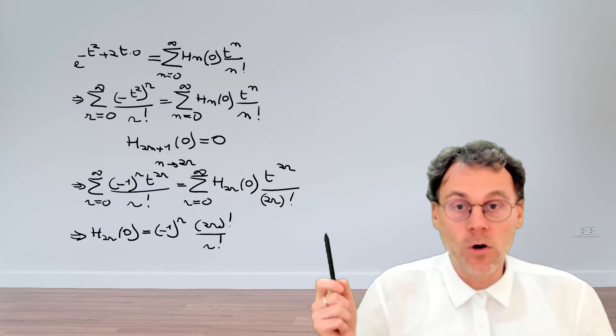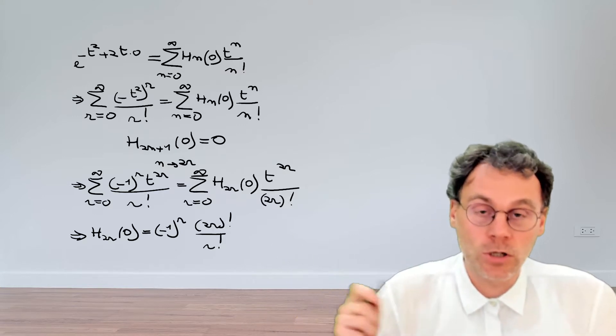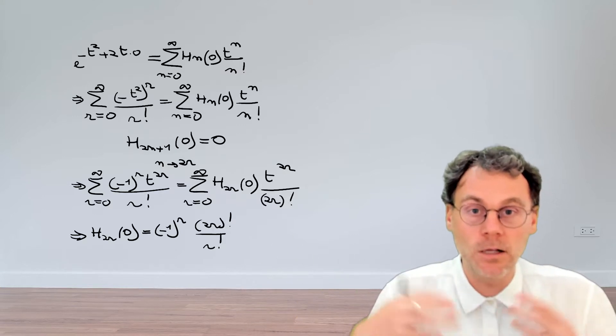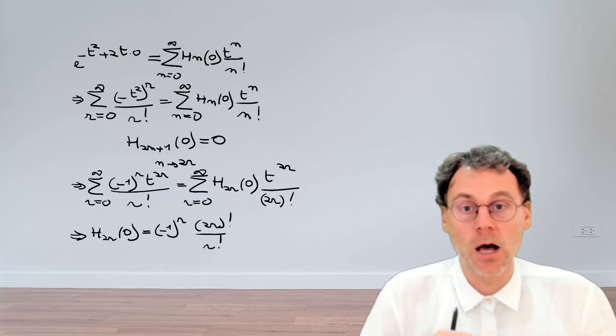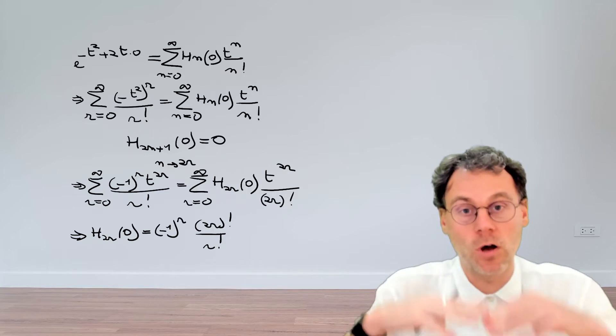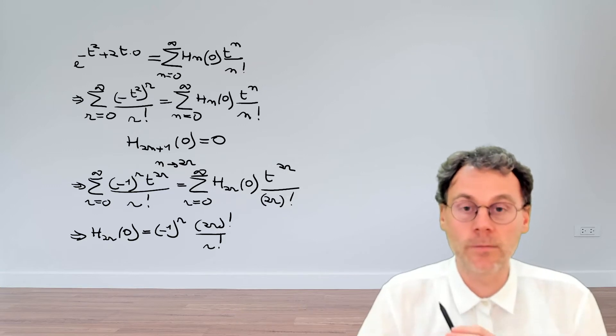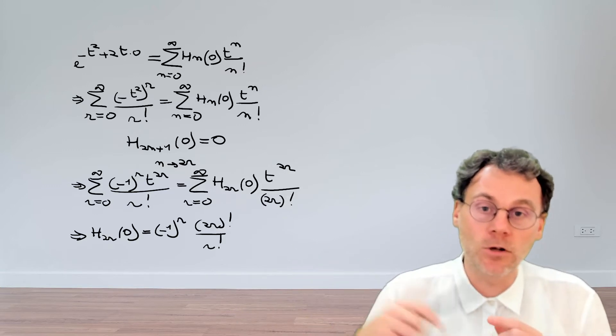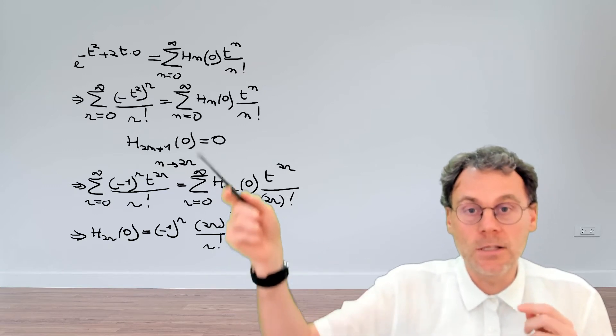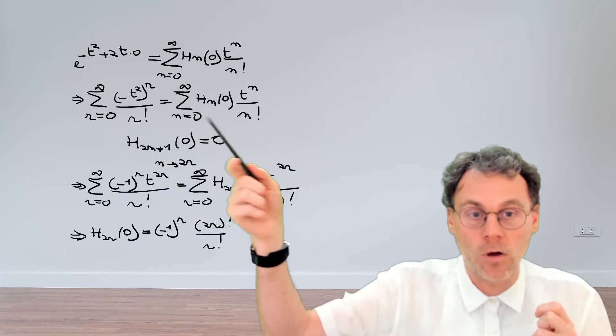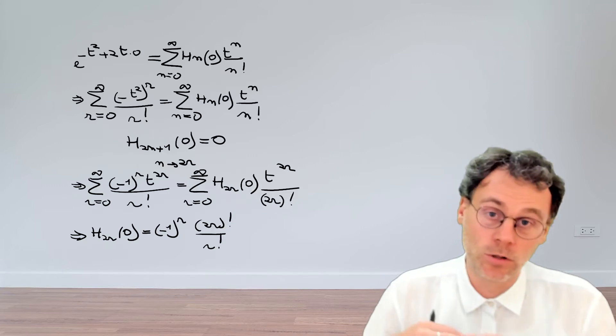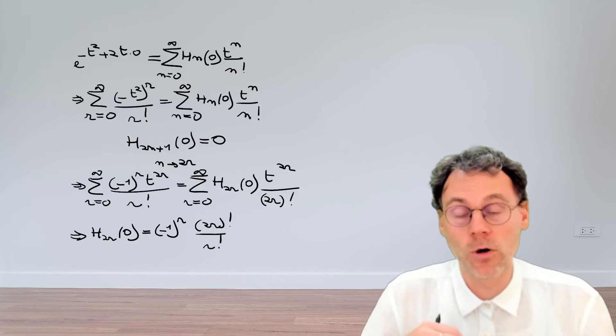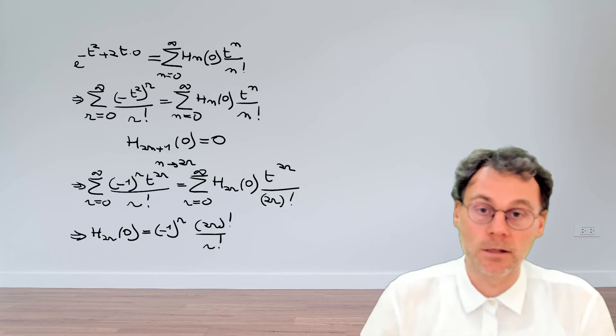Now, since these Hermite polynomials are used in the Gauss-Hermite modes, basically the solutions of the paraxial wave equation are just multiplications of that central Gaussian mode, the fundamental Gaussian mode, by these Hermite polynomials. So since these Hermite polynomials of odd order are 0, that also means that the odd order Gauss-Hermite modes will also be 0 at the origin.